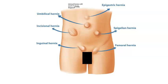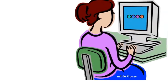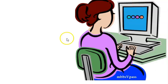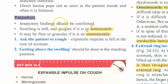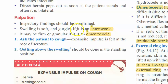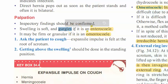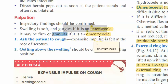Now let us go to palpation. All the inspection findings you will confirm. You will assess local temperature and tenderness. Regarding the swelling: if it is soft and gurgles, it is an enterocele — the content is small intestine. If it is granular, it is an omentocele, as it contains omentum. So either it is small intestine — enterocele with gurgling — or omentum — omentocele with granular feel.